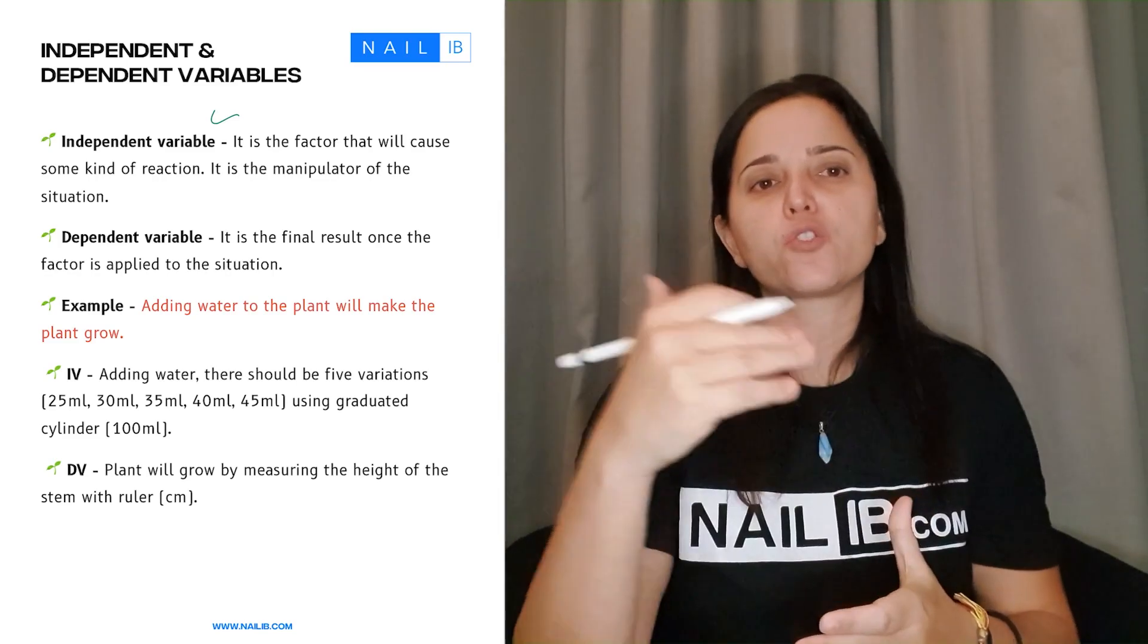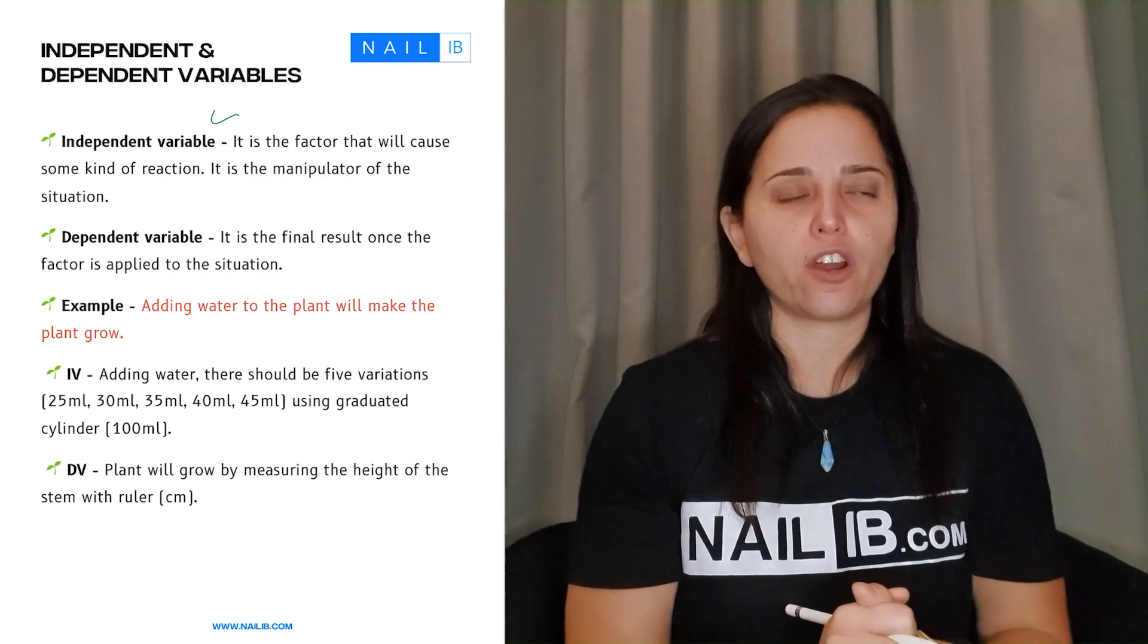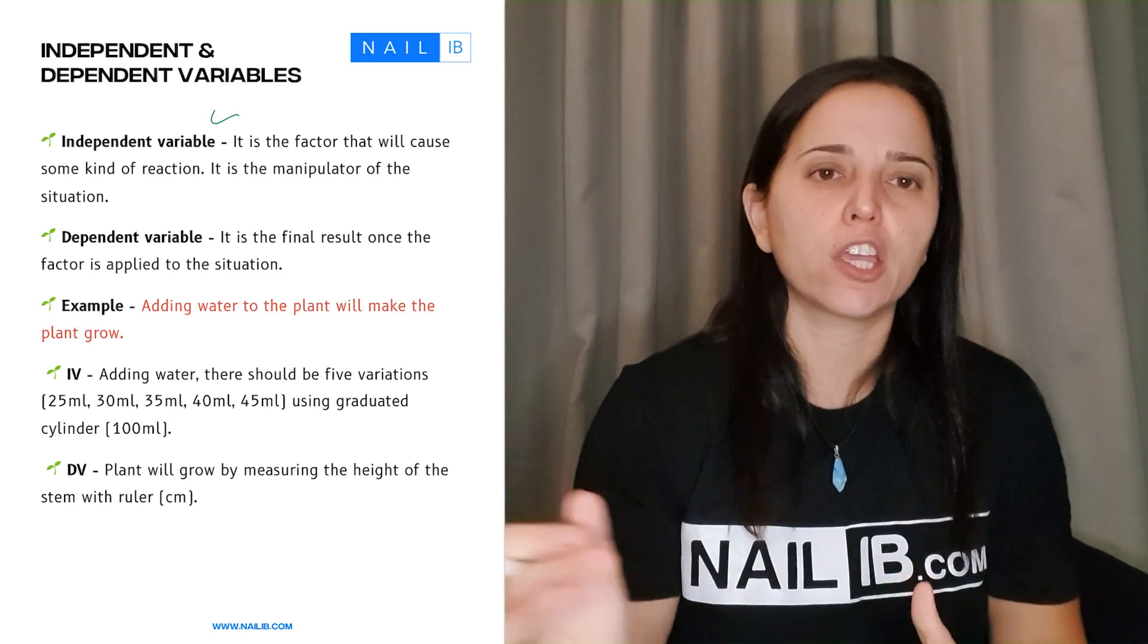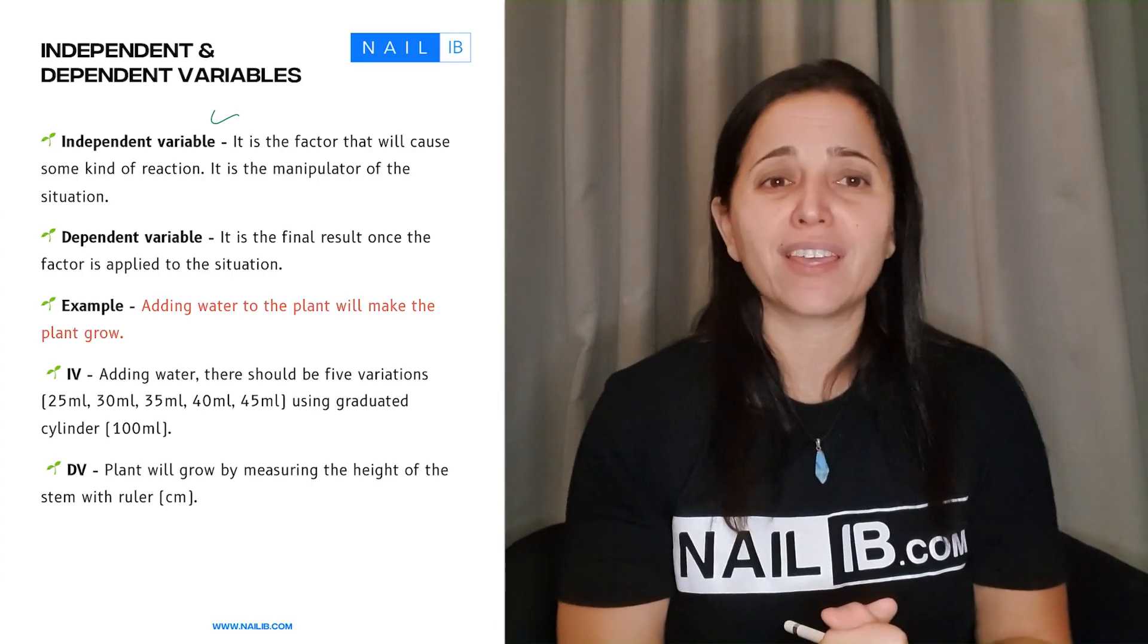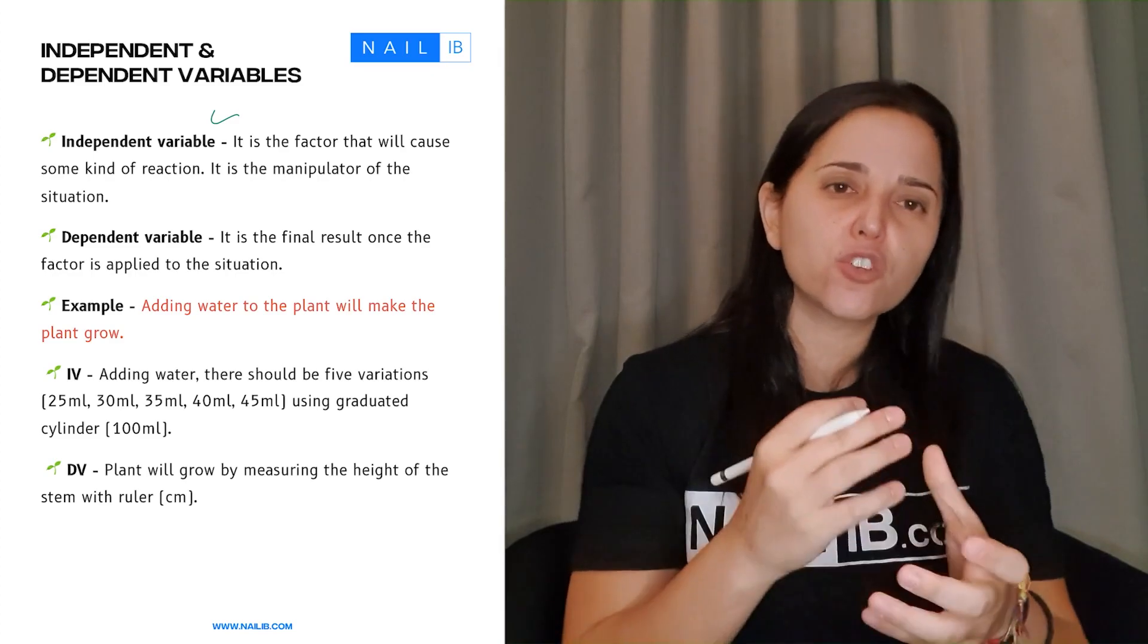For instance it's a temperature that is affecting if you're sweating or not. It is a pH that is changing your structure. It could be anything from an enzyme that is causing a breaking down of some food. So that's your independent variable.